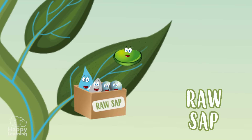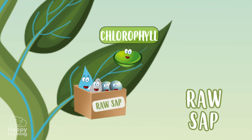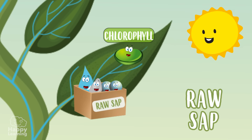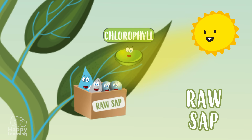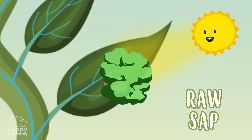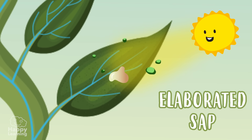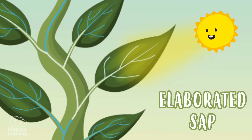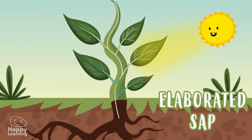Now it's chlorophyll's turn! The chlorophyll in the leaves has all the necessary ingredients for photosynthesis to take place, and when it receives sunlight the process begins, transforming the raw sap into elaborated sap, which circulates around the plant and works as food.